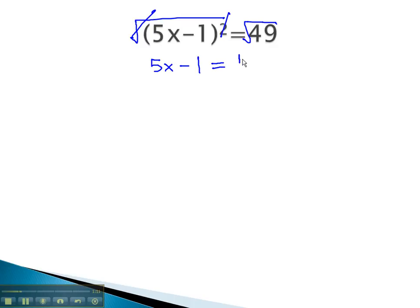5x minus 1 is equal to positive or negative 7, because both of those, when squared, would have equaled 49.